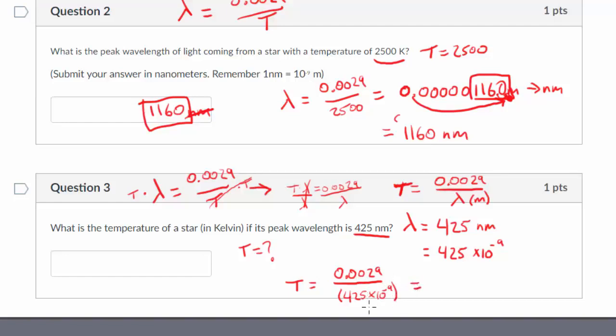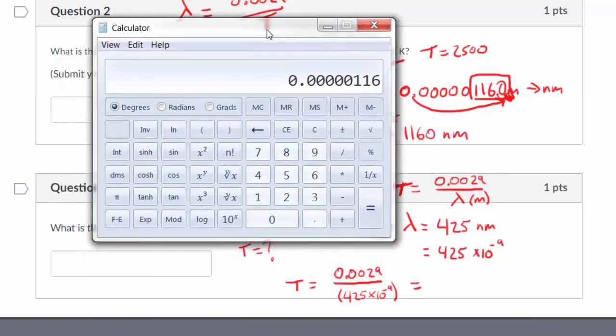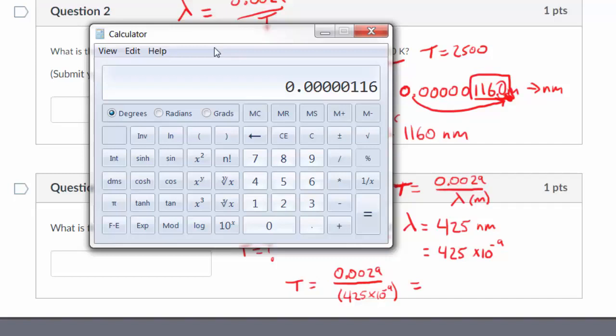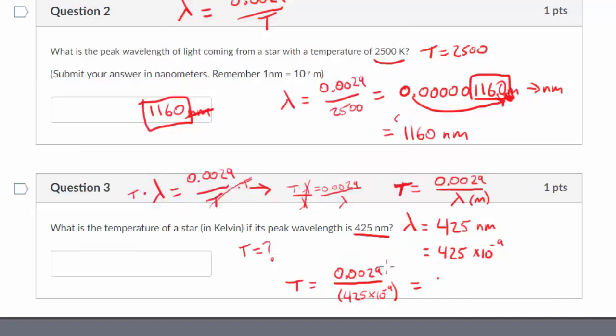We're doing real science here, people. This is like real math and science. It's not easy. So 0.0029 divided by, and I'm going to use parentheses to make sure that everything is on the denominator. Parentheses, 425 times 10 to the 9 negative. Close parentheses. And then don't forget, enter. Whenever you're using those parentheses, if you're doing it on a calculator like this, you've got to hit enter at the end. And what do I get? This is a good check.